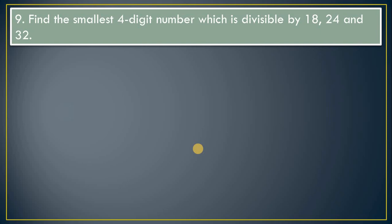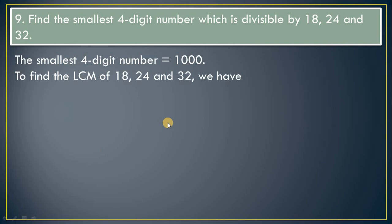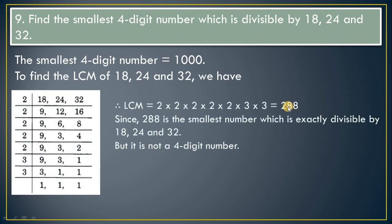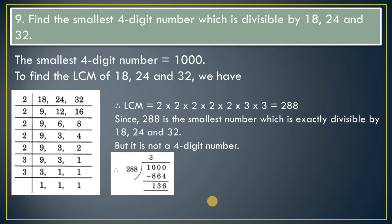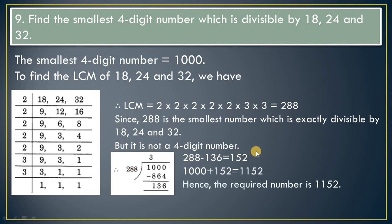Question 9: Find the smallest four-digit number exactly divisible by three given numbers. That number will be larger, so use LCM. LCM = 288. The smallest four-digit number is 1000. Divide 1000 by 288 — remainder is 136. Since we want a four-digit number, subtract 136 from 288 to get 152, then add 152 to 1000. Hence the required number is 1152.